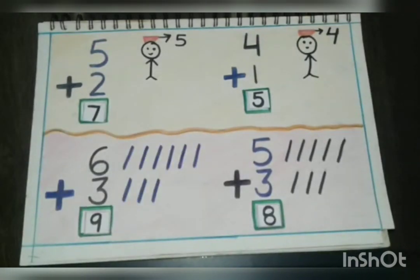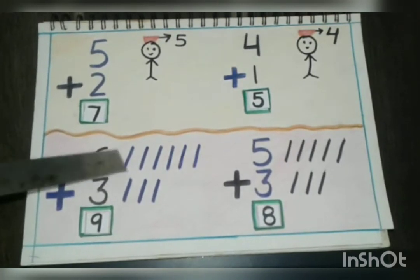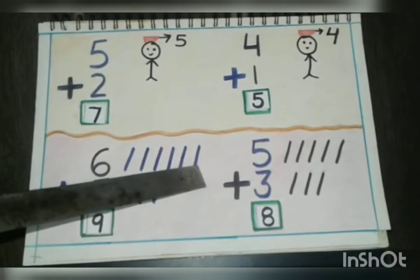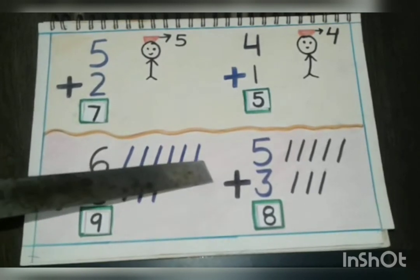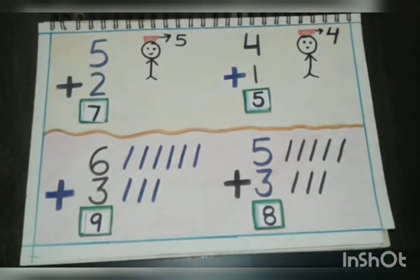Students, you can use any of the two ways to add the given numbers. But keep this thing in your mind that when you draw the lines, the number of lines should be equal to the given number. Like if the number is six, you have to draw the six lines. If you will not draw the lines equal to the given number, your answer will be wrong. So you have to be very careful. I hope children you have understood the concept of vertical addition very well. Now you will practice more sums of this type in your practice notebook. Thank you and have a nice day.